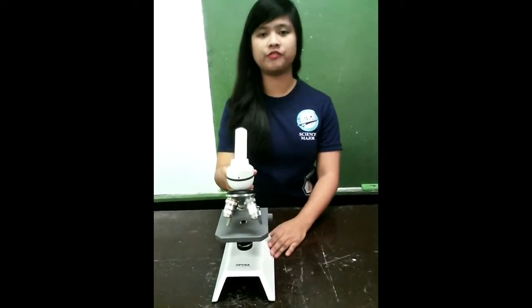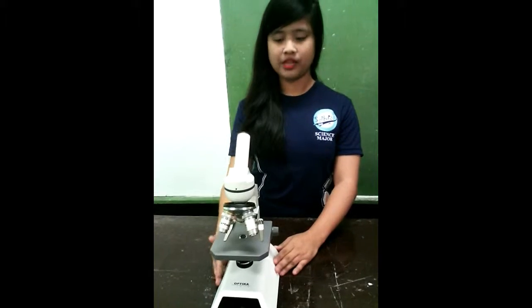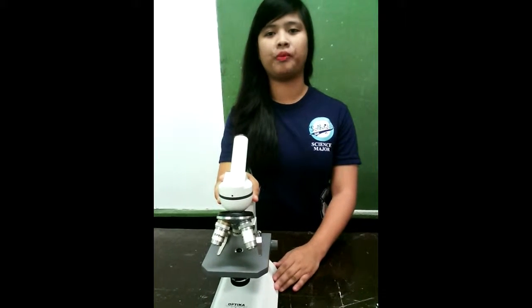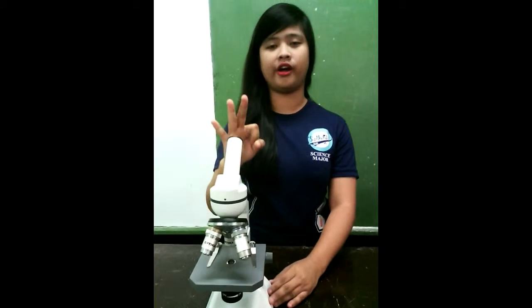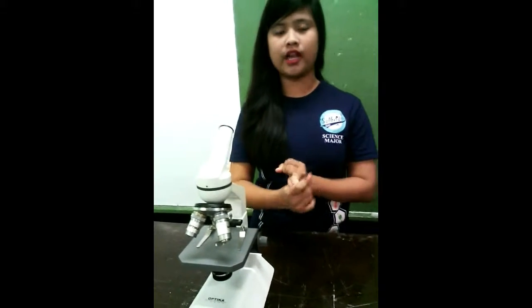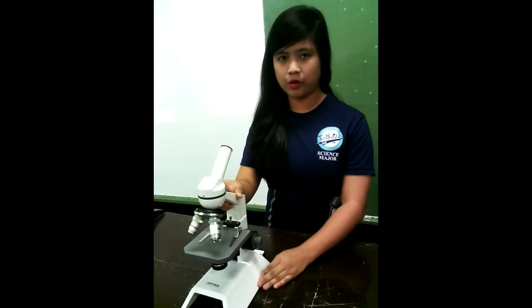Let's proceed to the parts of the compound microscope. The parts are classified into three major parts, which are the mechanical part, the magnifying part, and the illuminating part. And we will discuss it one by one.